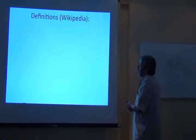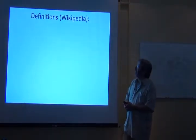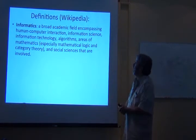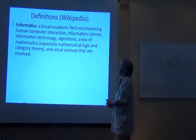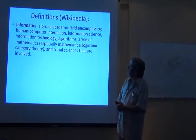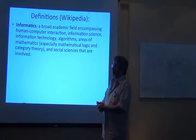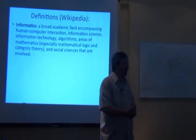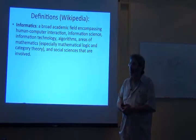Let's start with some definitions. From Wikipedia: informatics is a broad academic field encompassing human-computer interaction, information science, information technology, algorithms, mathematics, and social sciences. That's about as broad a definition as we could ask for — it doesn't tell us very much.